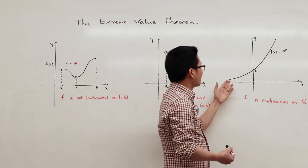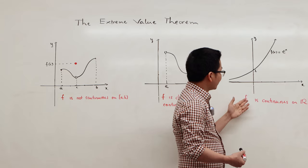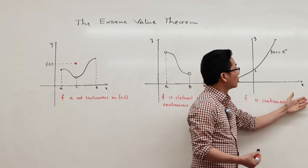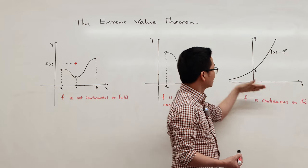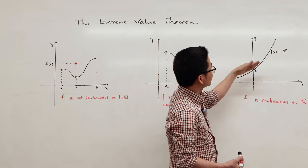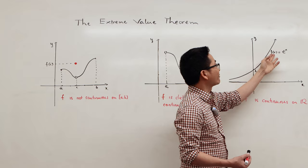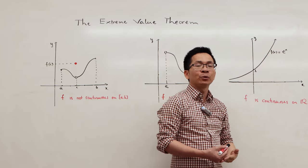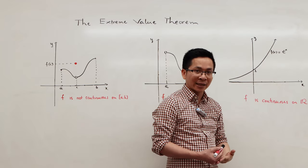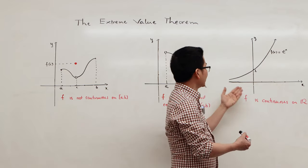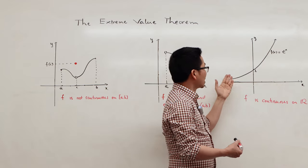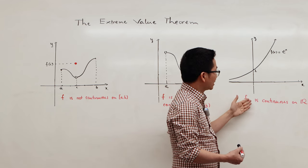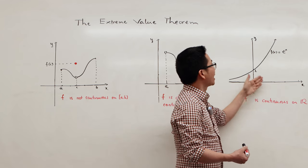In the third example, f is a continuous function on the whole real line. In fact, this is the graph of the function f of x equals e to the x. Here, f doesn't have an absolute minimum in the reals, and f doesn't have an absolute maximum in the reals.